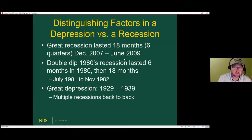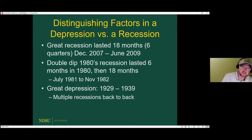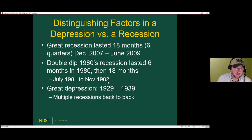Recessions can last quite a while and be fairly deep and still not be considered a depression. The Great Recession lasted 18 months — six quarters — starting around December 2007 and ending in June 2009. We also had a double dip recession in the 1980s: the first lasted six months, then another that lasted 18 months, from July 1981 to November 1982. The Great Depression, on the other hand, lasted about 10 years and was very deep.